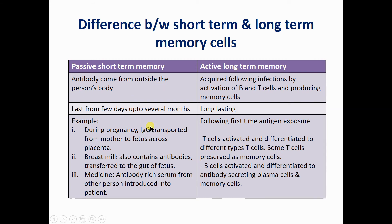This immunoglobulin gives protection to the fetus against certain types of infections similar to those the mother's body is protected against. After delivery, when the child is breastfed, breast milk from the mother also contains antibodies which are transferred to the gut of the baby, helping protect it against certain bacterial infections. In medicine, we also give antibody-rich serum from one person's body into a diseased person's body — that is also known as passive short-term memory.